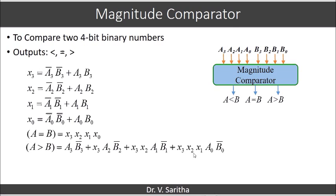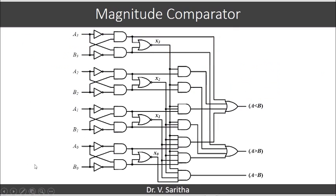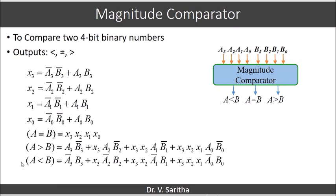Similarly, we can write the expression for A less than B, where A's bit is 0 and B's bit is 1. The expression is: A3'B3 + X3·A2'B2 + X3·X2·A1'B1 + X3·X2·X1·A0'B0. Drawing the circuit using these three expressions for A=B, A>B, and A<B gives us the complete magnitude comparator circuit.